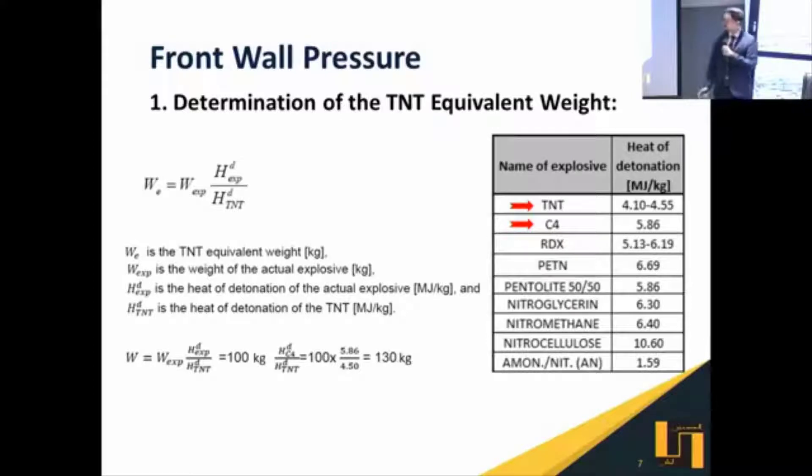The first step: since most of the codes and references usually consider the explosive charge as TNT mass, and in our case the charge is C4 mass, we need to transform this C4 into an equivalent TNT mass in order to be able to continue our solution. This transformation will be based on the heat of detonation ratio between the TNT and the C4 material. It can be seen here that 100 kilograms of C4 is equivalent to 130 kilograms of TNT. From this point, we will be dealing with the 130 kilograms of equivalent TNT mass.